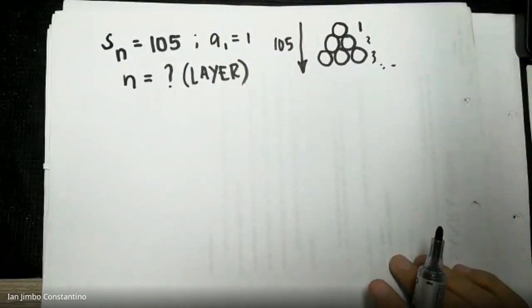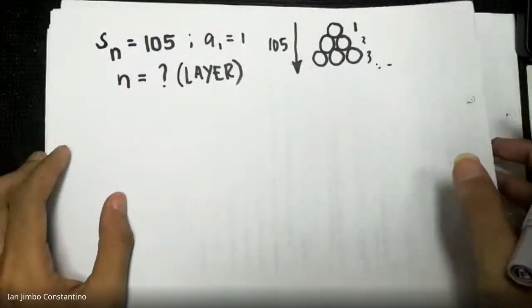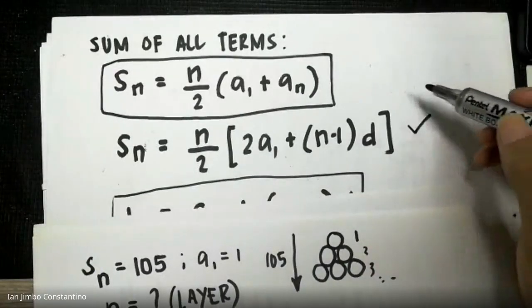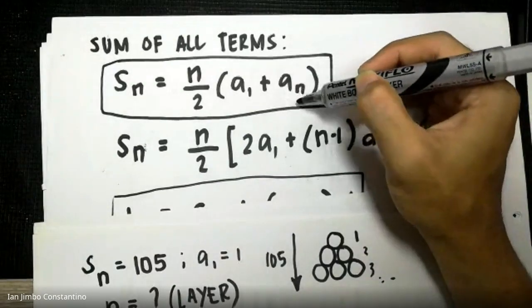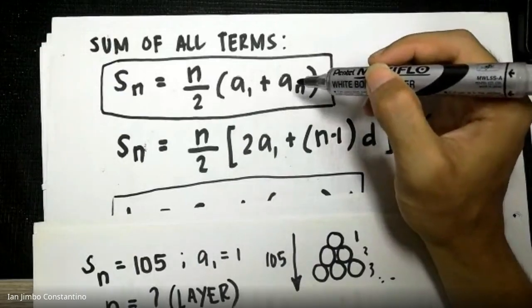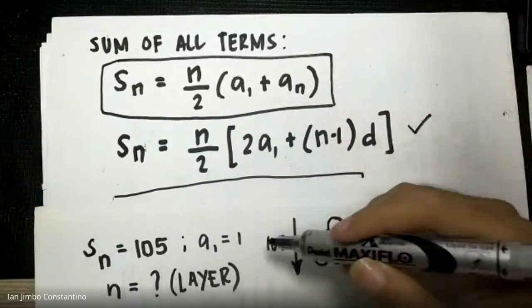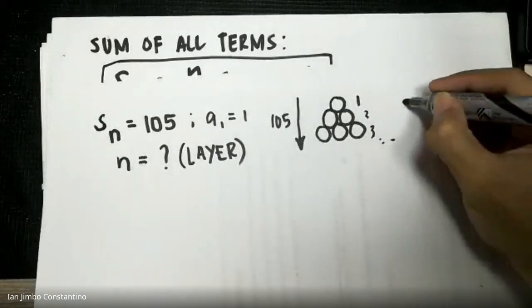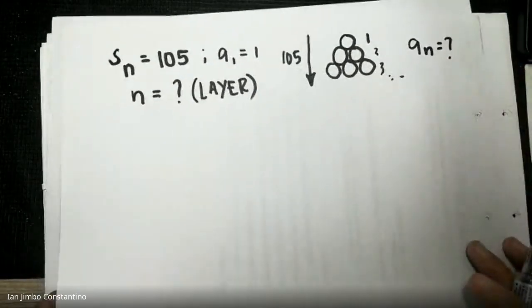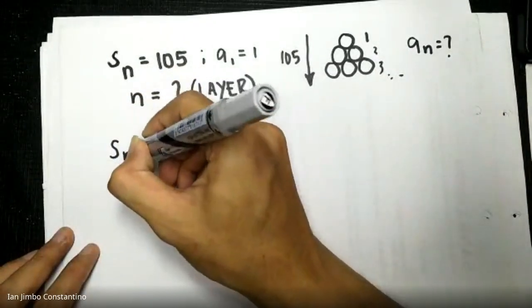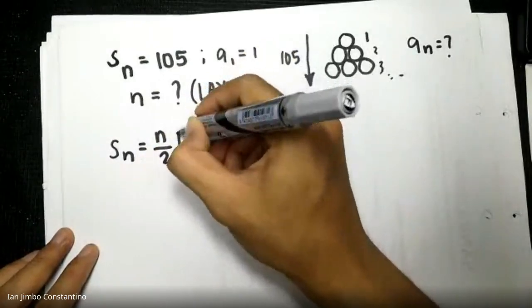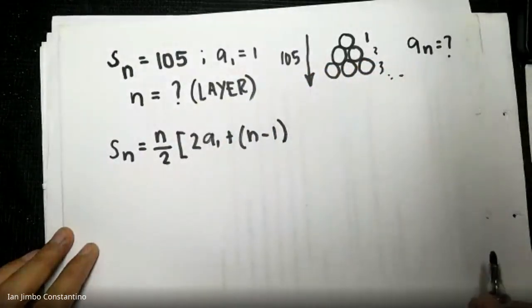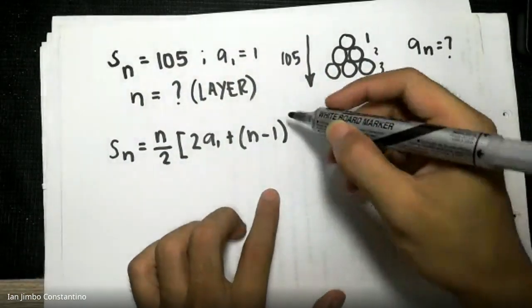Since we have the total and the first term, we can use the formula: Sn = n/2 × (2a1 + (n − 1)d). The common difference d is 2 minus 1 = 1. We have Sn = 105. Substituting: 105 = n/2 × (2(1) + (n − 1)(1)).